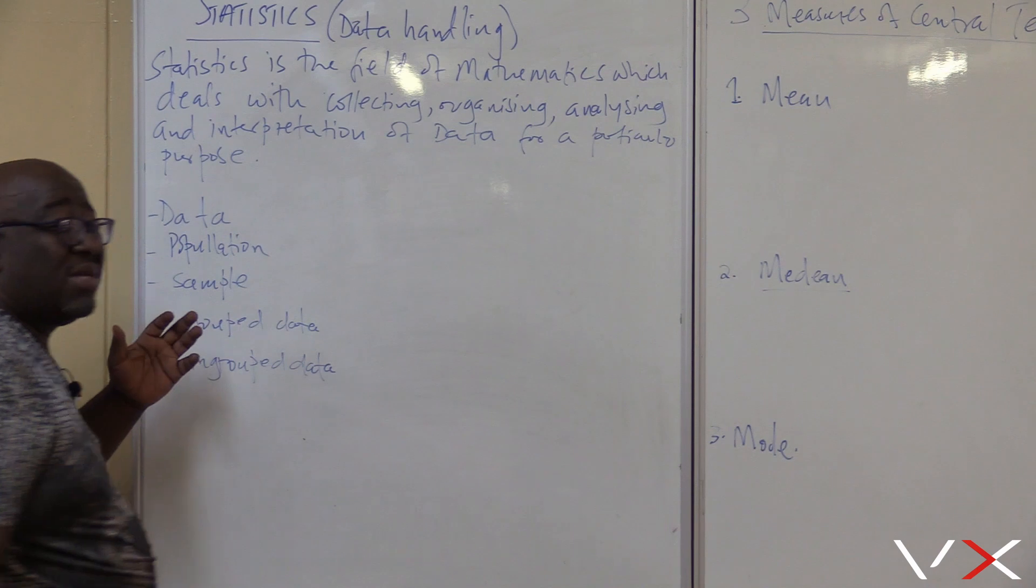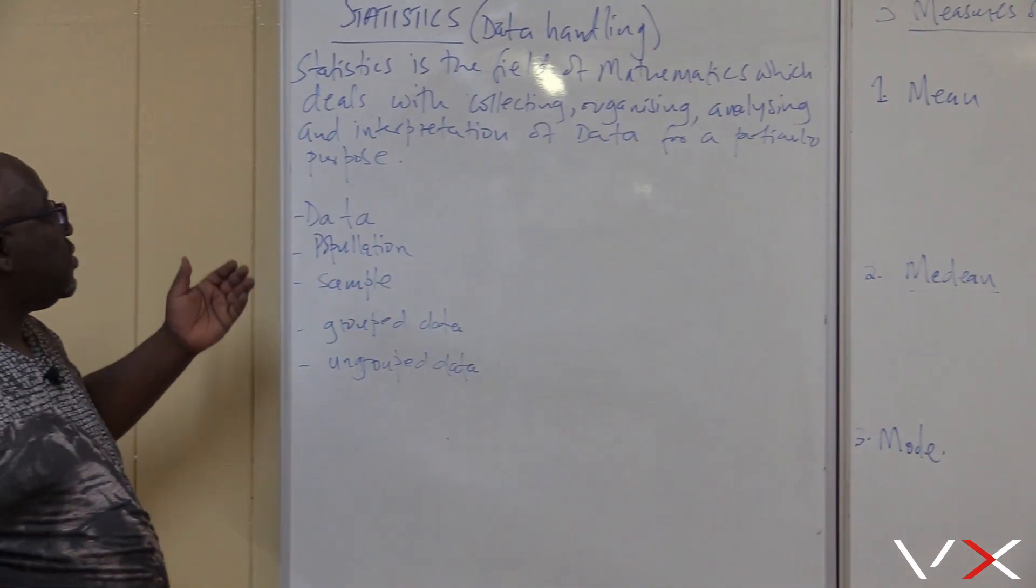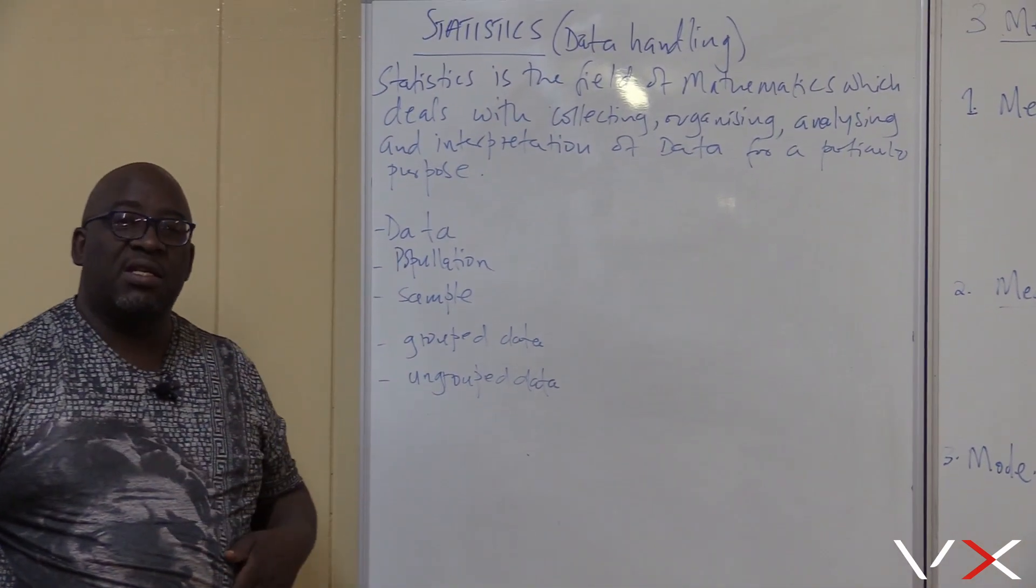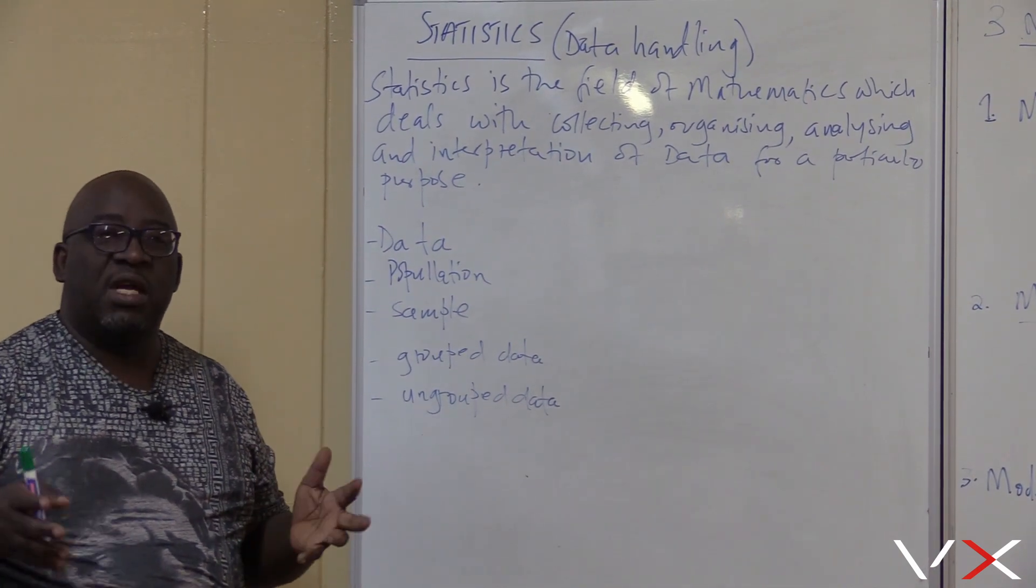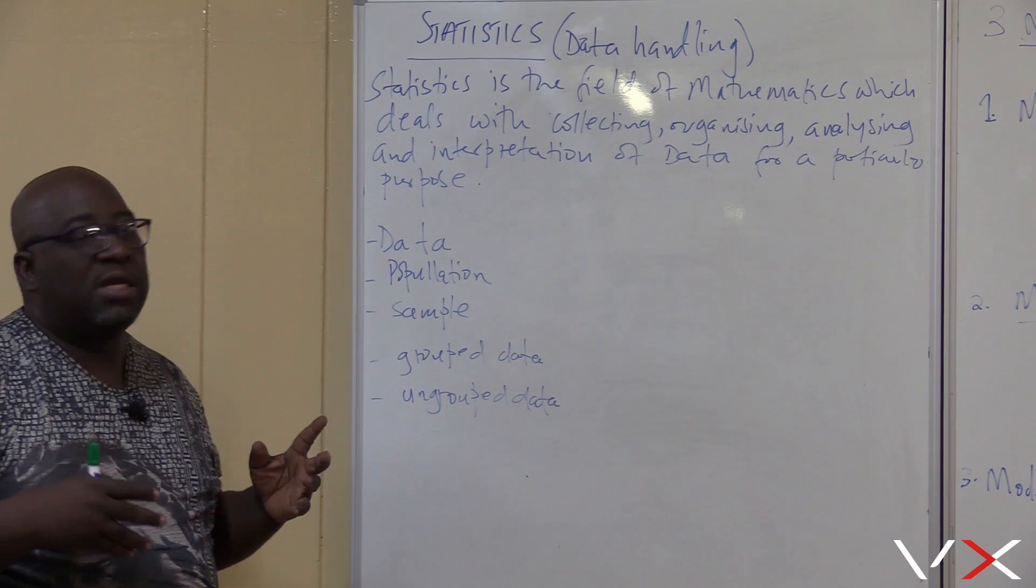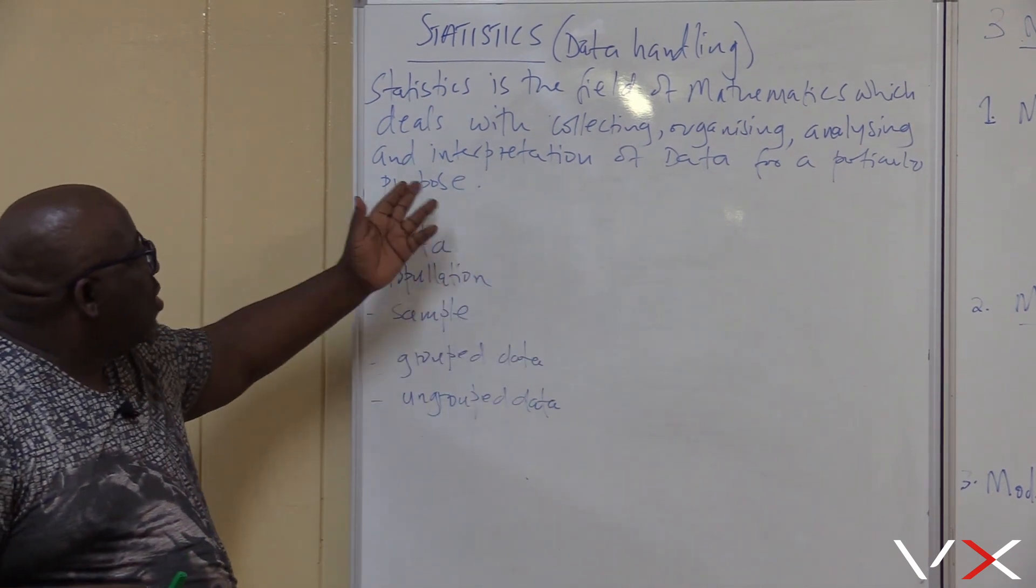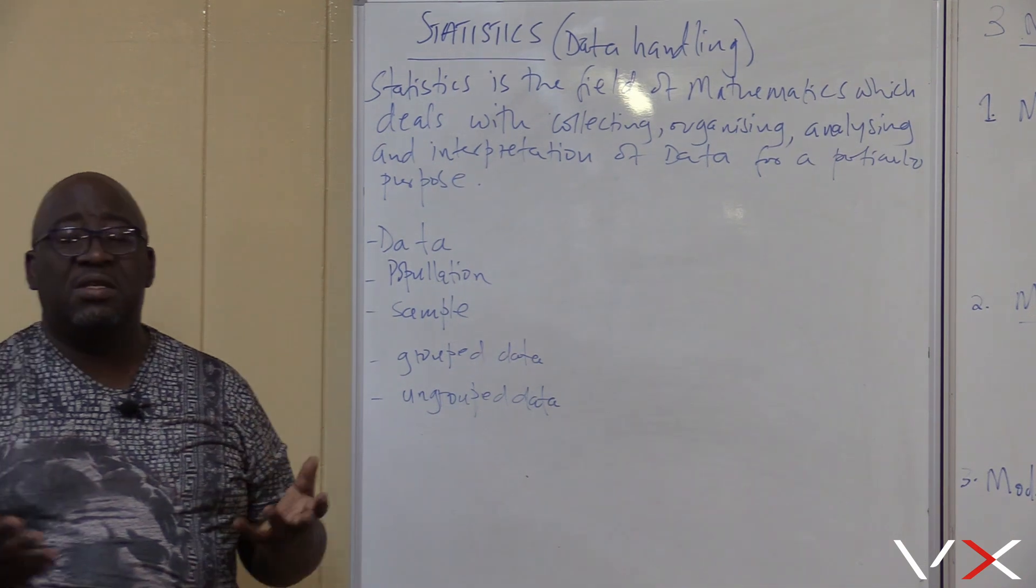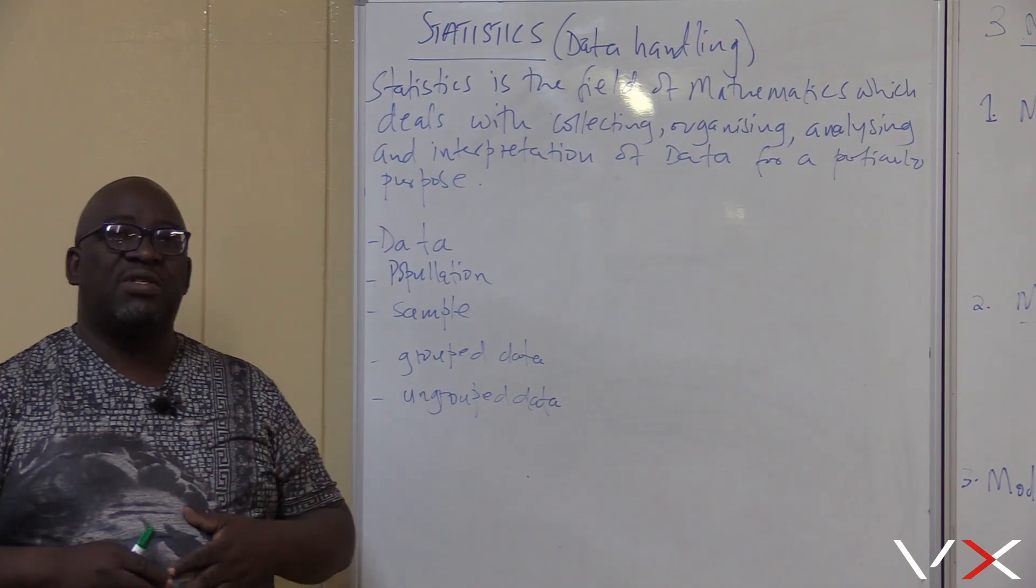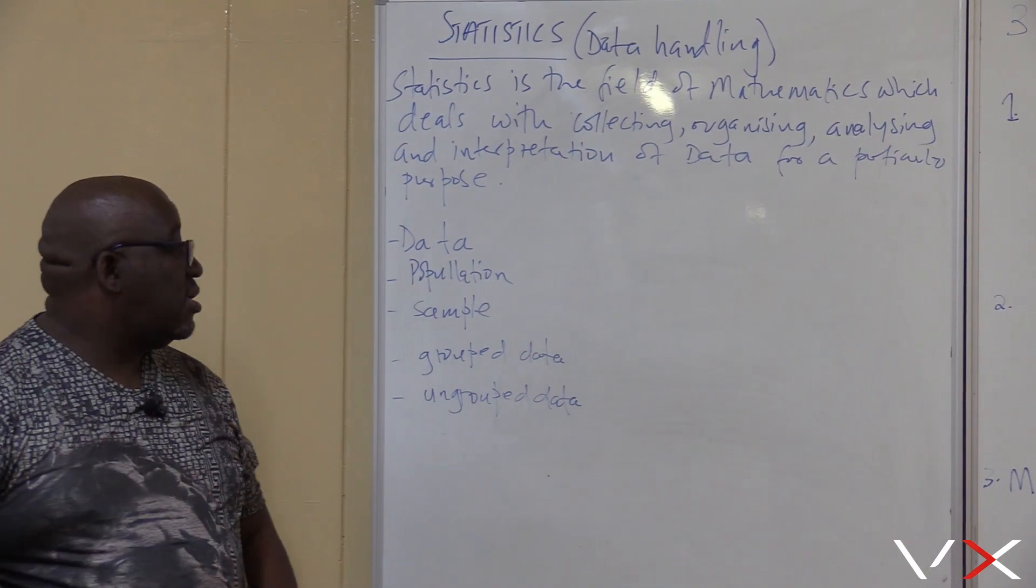There are certain terms that we use in this section, like data. What is data? Data is the information that has been collected. Raw data is that information that has been collected before we organise it, analyse it and interpret it. We interpret it in different ways. We can either use graphs, bar graphs and other types of graphs.